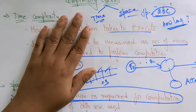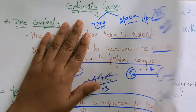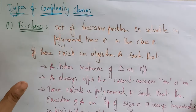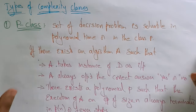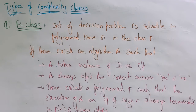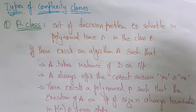Now coming to the complexity classes. There are different types of complexity classes: P class, NP class, and the completeness of NP, and so on. There are different types of classes, and I want to explain some of them regarding complexity classes.